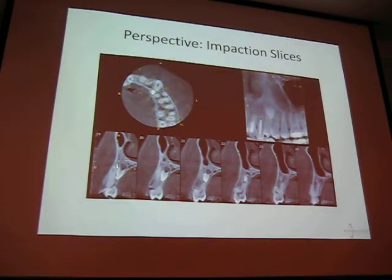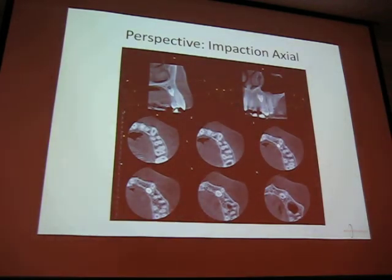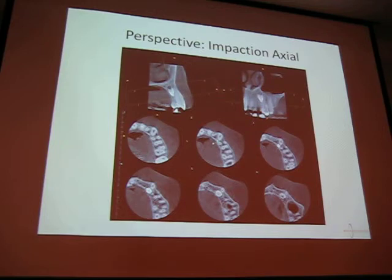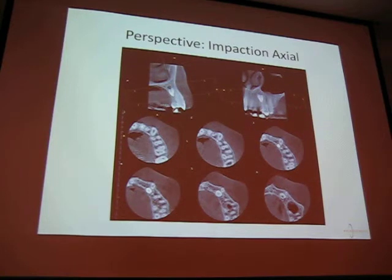Talking about impactions — we're doing these slices, but I find it more interesting to go axial from the top down. Because the question is: how are we in communication with an adjacent tooth? Can you show me where? We're able to slowly go down and see that. Again, just something you don't get from a PA.